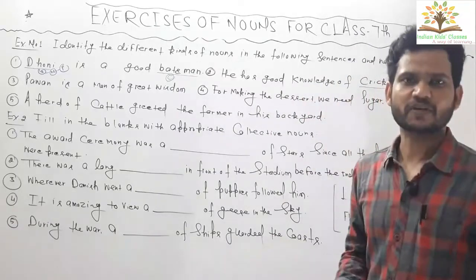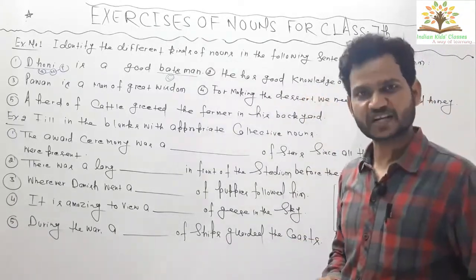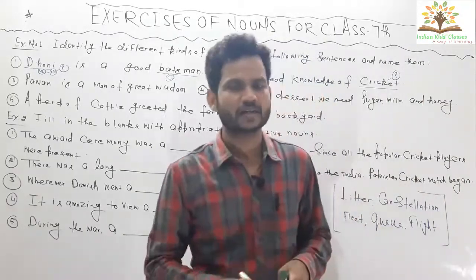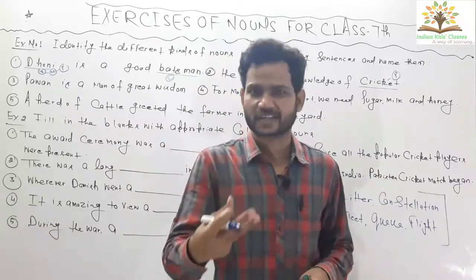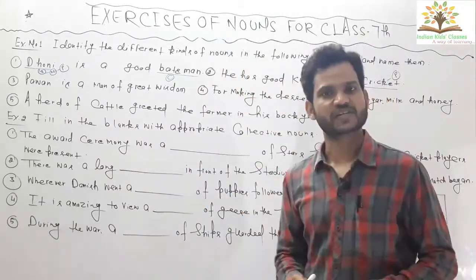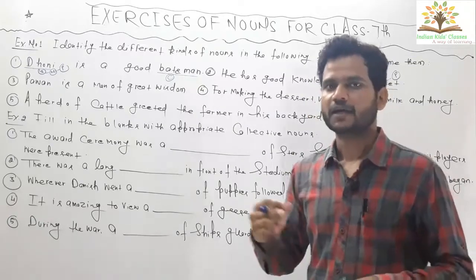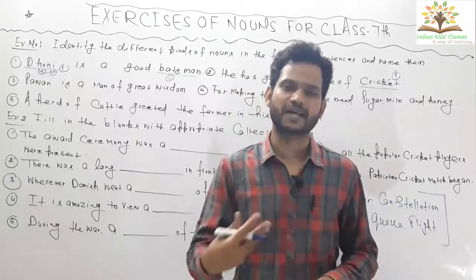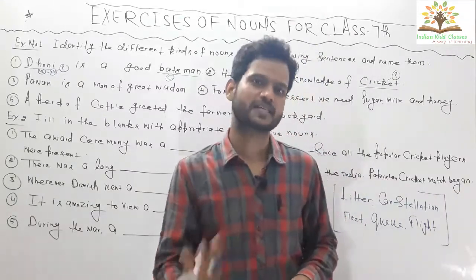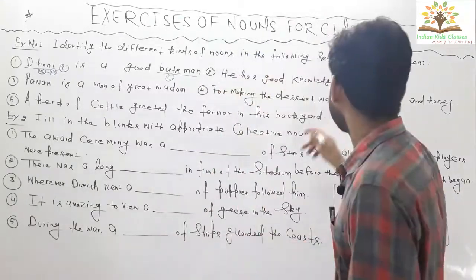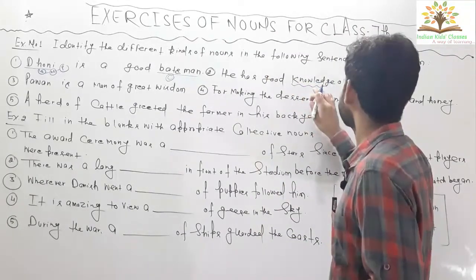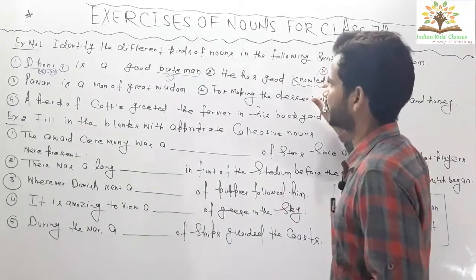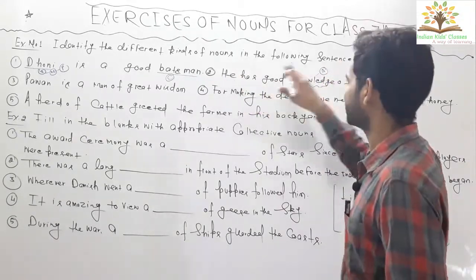Now, knowledge — as we know, knowledge is an abstract noun. Why? Because we cannot count knowledge, we cannot see knowledge, we can only feel it. That's why knowledge is an abstract noun. You can take many examples: wisdom, defense, action, management, honesty, love — these are all abstract nouns.